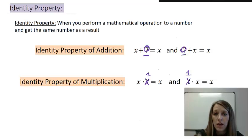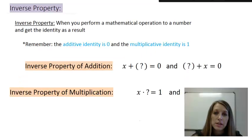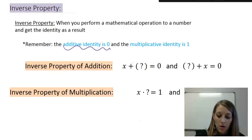Now, you won't have any homework over this, but this feeds into our next property. And that's our last property, which is the inverse property. It says, when you perform a mathematical operation to a number and get the identity as the result. So, basically, I want my numbers to cancel out, leaving me with my identity. And I want to remind you what we just saw. The additive identity is zero and the multiplicative identity is one.